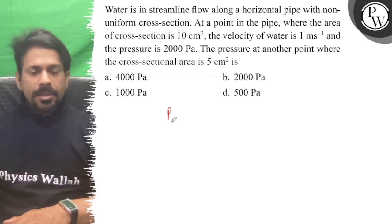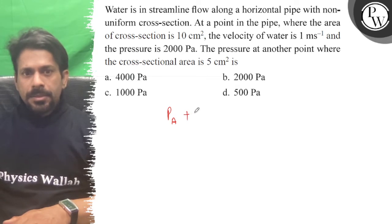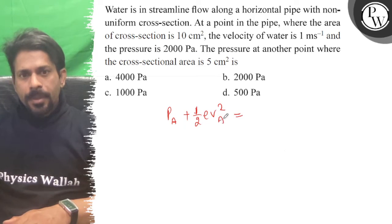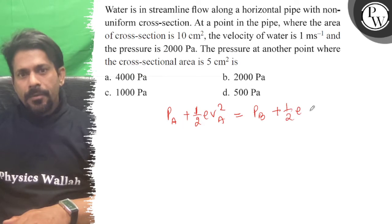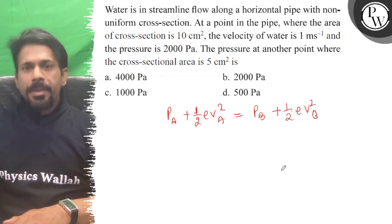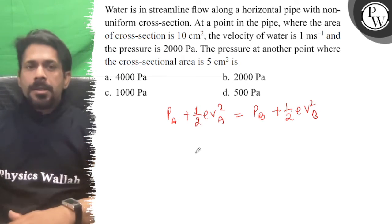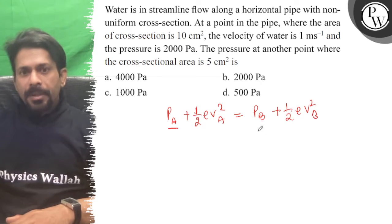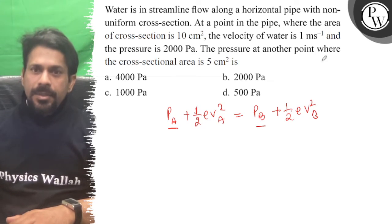We know the Bernoulli equation: Pa plus half rho va² equals Pb plus half rho vb². Now, Pa and Pb... where are we? Where the area is 10 cm², velocity is 1 m/s and pressure is 2000 Pa.